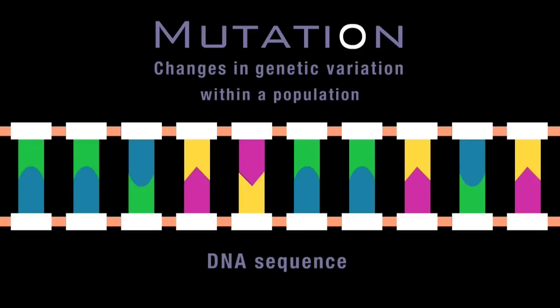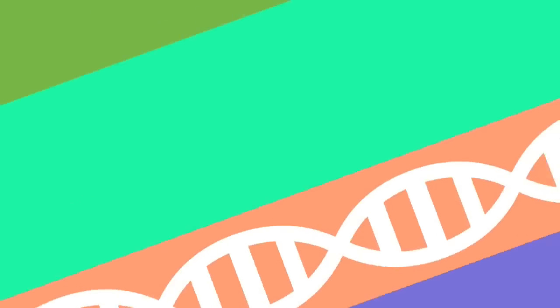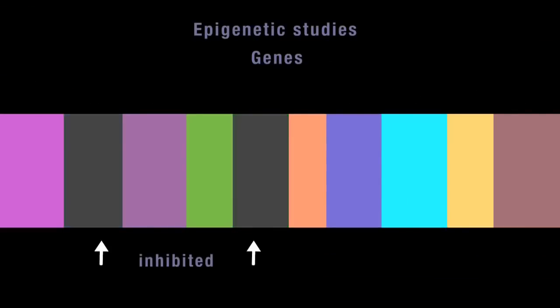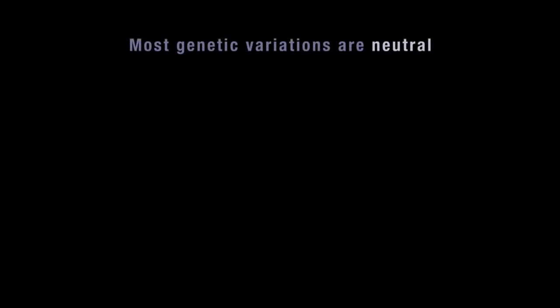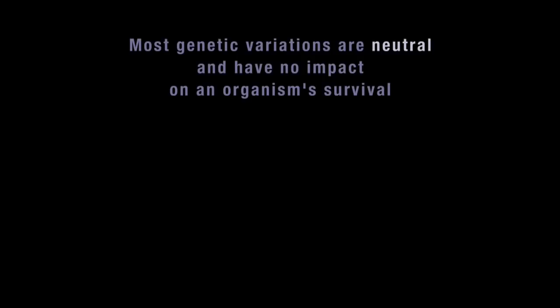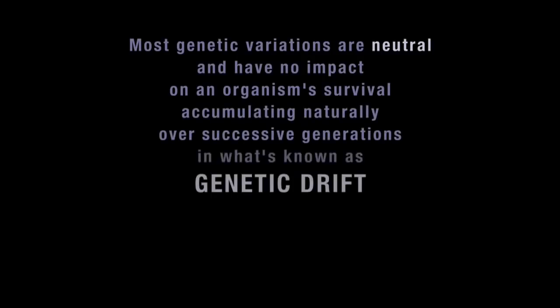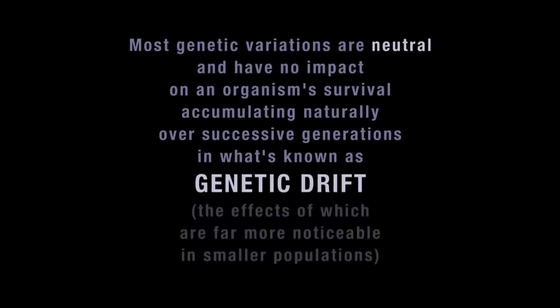Mutation isn't the only cause of variation, because it's not only the DNA sequence that's important to evolution. Epigenetic studies, for example, show that genes can be switched on or off, and that this genetic activation or inhibition can be inherited and expressed in later generations. Most variations are neutral and have no impact on an organism's survival, accumulating naturally over successive generations in what's known as genetic drift, the effects of which are far more noticeable in smaller populations.